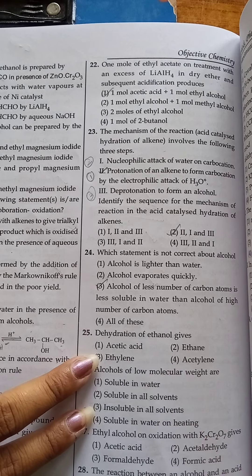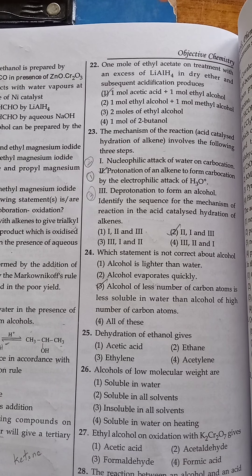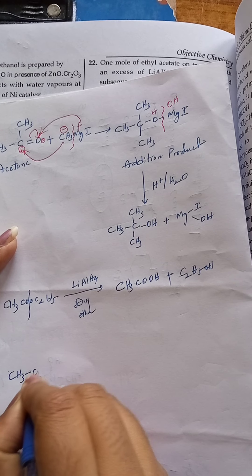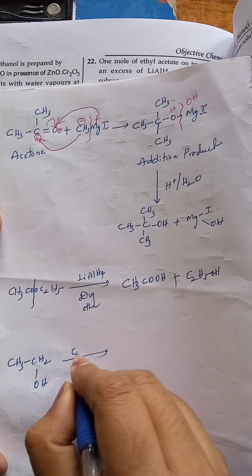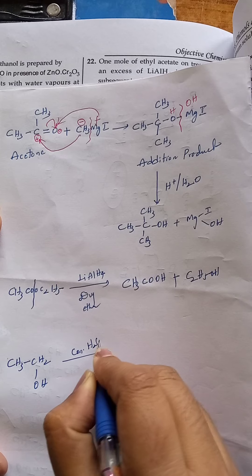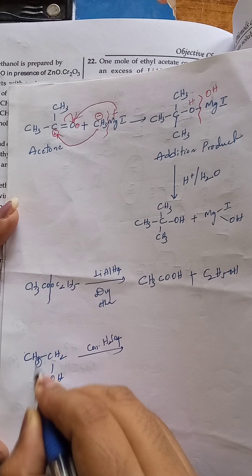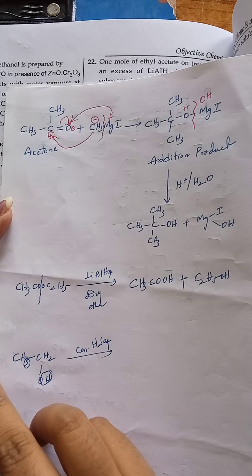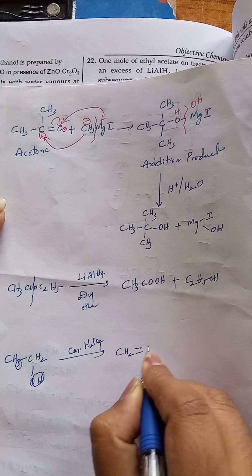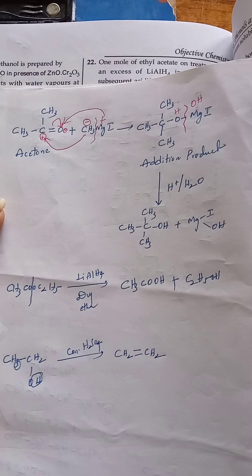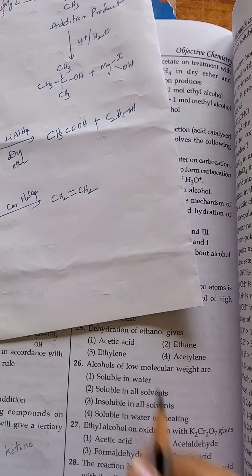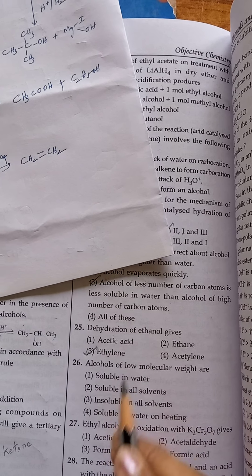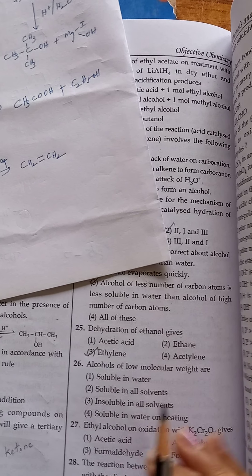Dehydration of ethanol gives what? Dehydration means removal of water. Ethanol is CH3CH2OH. In presence of concentrated H2SO4, hydrogen from one carbon and OH from the other eliminate. CH3 converts to CH2, giving a double bond — that is ethene, also known as ethylene. So dehydration of ethanol gives ethylene as the product.